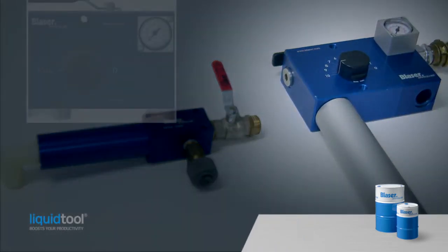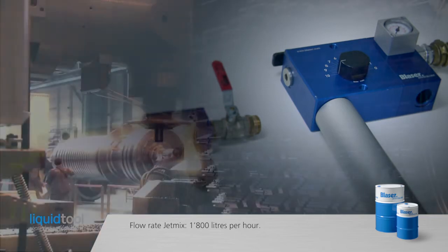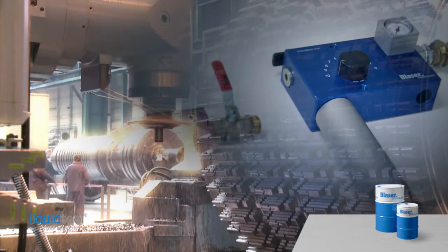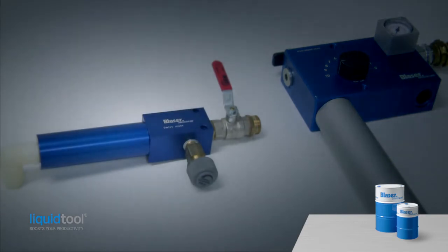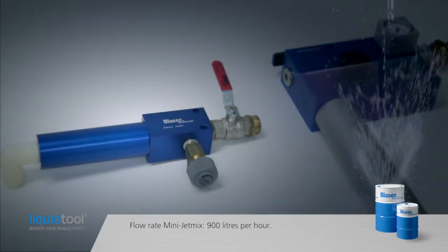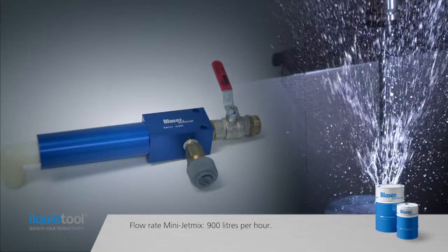For efficient mixing of the emulsion, there are two devices available. The jet mix with six bar water pressure has a flow rate of 1800 liters per hour. This device is recommended when several and larger machines are in use. The mini jet mix has a capacity of 900 liters per hour and is recommended for single-filled and smaller machines.